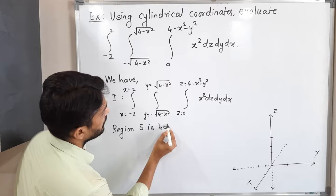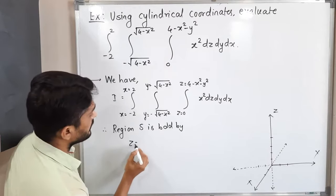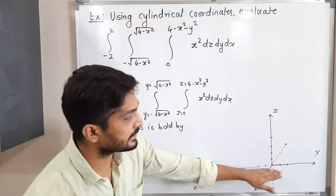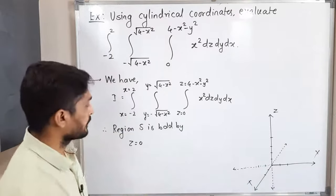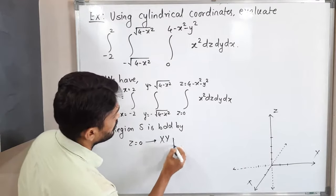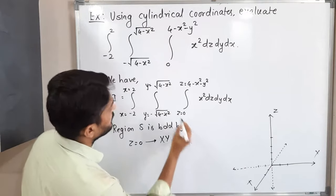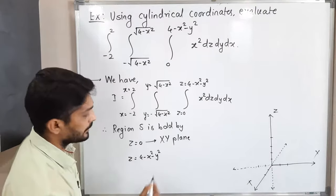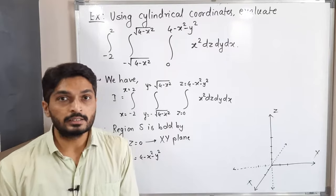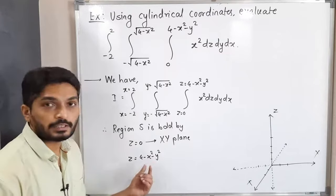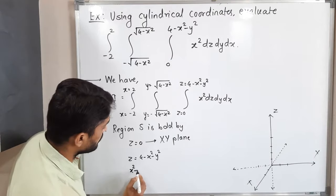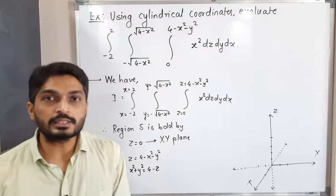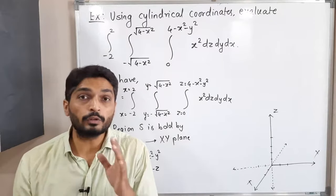Therefore, region S is bounded as follows. We have z = 0, which is the equation of the xy-plane — the horizontal plane. The next equation is z = 4 - x² - y². Rearranging: x² + y² = 4 - z.